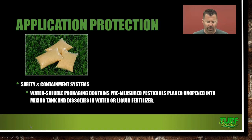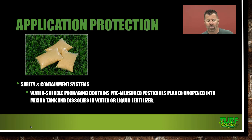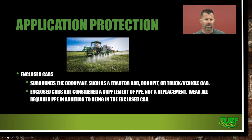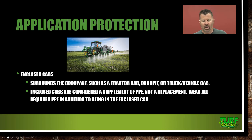Water-soluble packaging contains pre-measured pesticides placed unopened into the mixing tank and dissolves in water or liquid fertilizer. A lot of pesticides come in that form and it's a good way to transport your product — you don't have to worry about the liquid. Enclosed cabs surround the occupant, such as a tractor cab, cockpit, or even a truck vehicle cab. You've probably seen those big sprayers that drive over farmland — we live beside a farm and every so often you'll see a big fertilizer sprayer truck lowering the booms down and driving over the entire property. It's pretty cool.